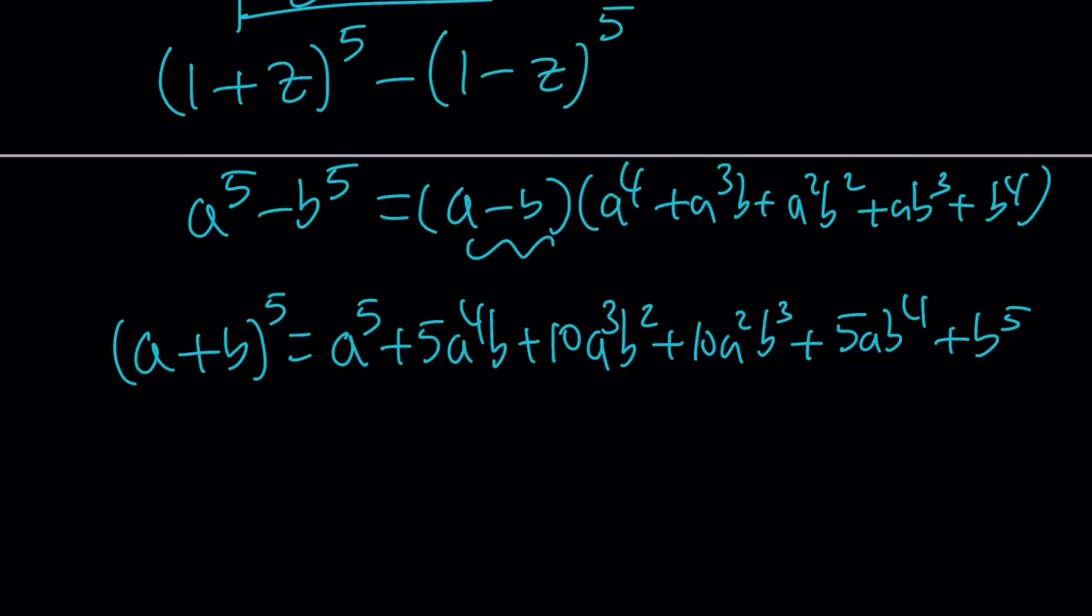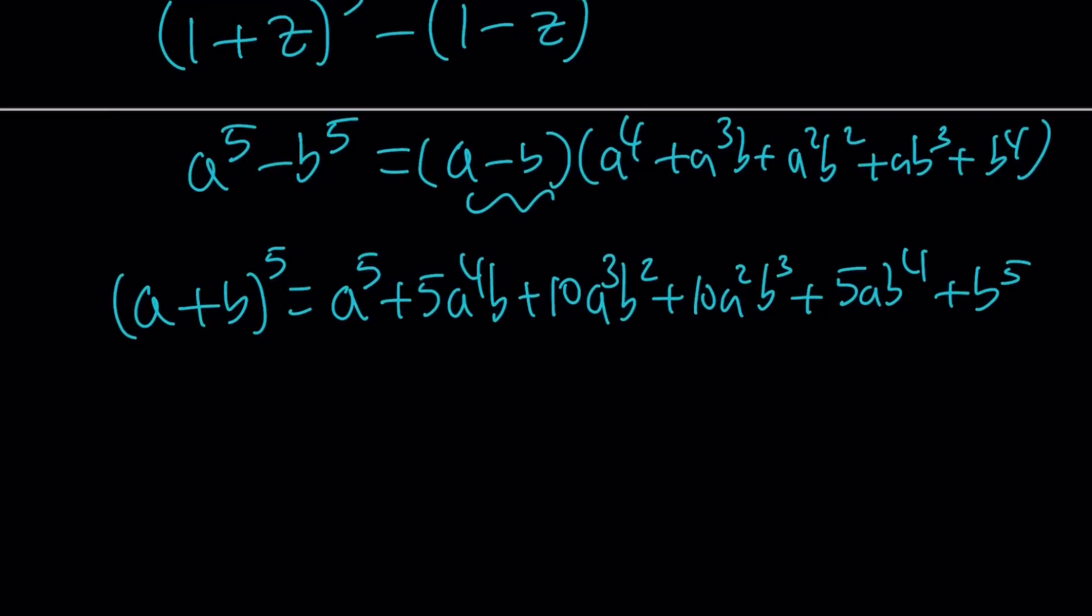Okay, so if you substitute that into this expression, you can kind of do this in rows. For example, (1+z)^5 is going to be 1 + 5z + 10z^2 + 10z^3 + 5z^4 + z^5. Obviously, this is the same thing as (z+1)^5, just written in reverse order.